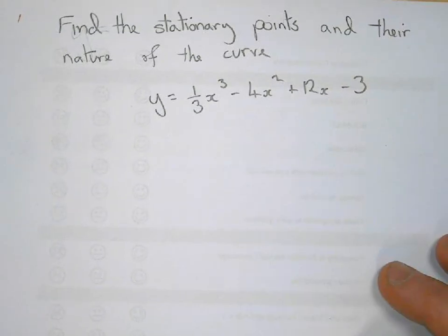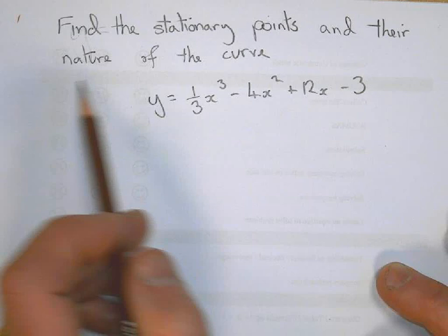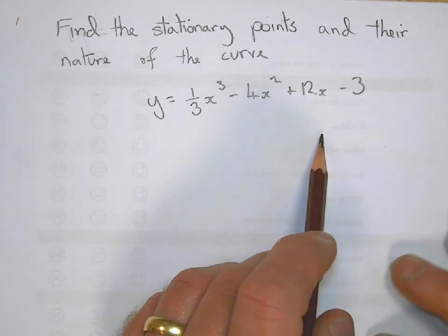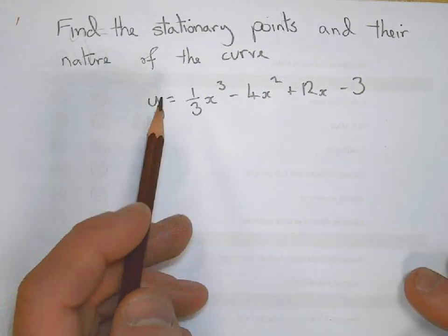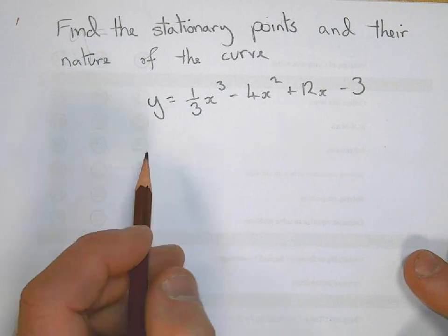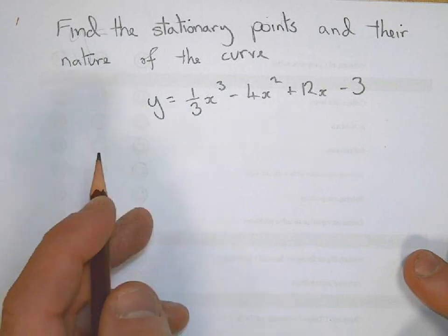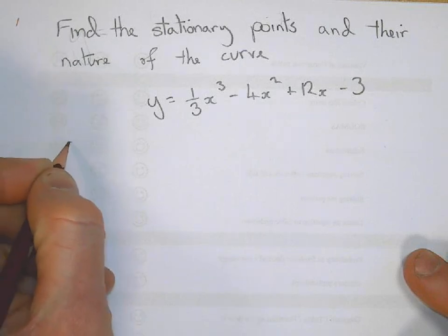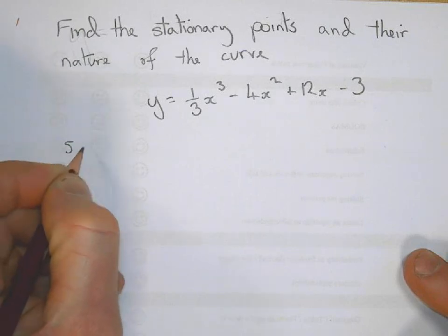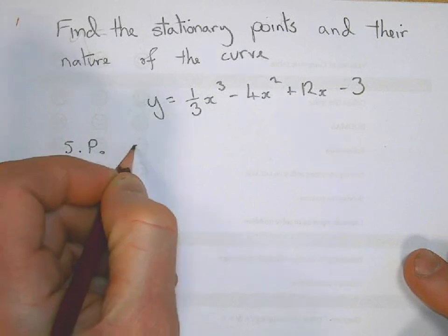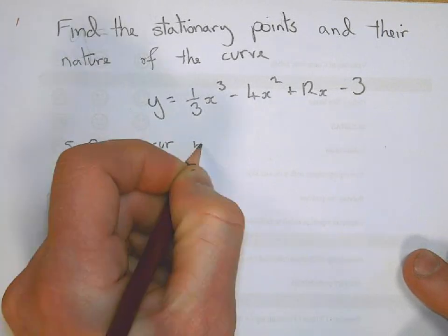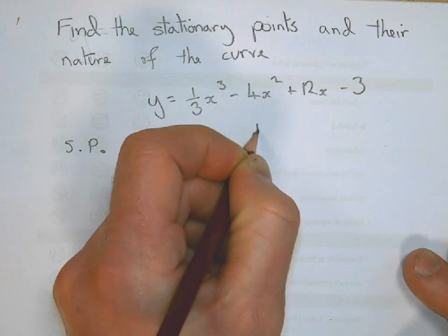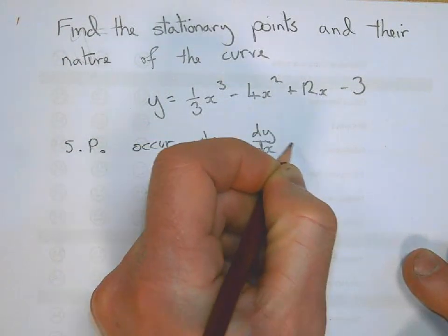In this question, we've got to find the stationary points and their nature of this curve. To find any stationary points, you've got to work out when dy/dx equals zero. So the first thing you should write down is stationary points, or turning points, or SP. Stationary points occur when dy/dx equals zero, and that will be your first mark.